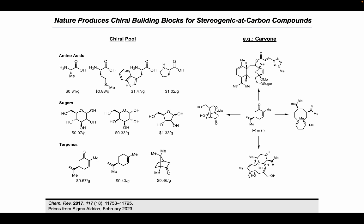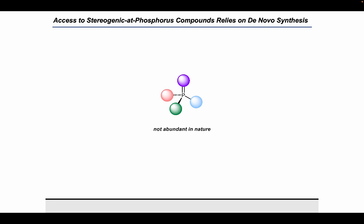The chiral pool is the collection of chiral molecules that nature produces in abundance, that can be isolated, sold by chemical suppliers, and used by synthetic chemists as starting materials. These building blocks include amino acids, sugars, and terpenes, among many other compounds. On the right, we can see how the chiral building block carvone has been applied as a precursor in the synthesis of a broad variety of architecturally complex and stereochemically rich targets.